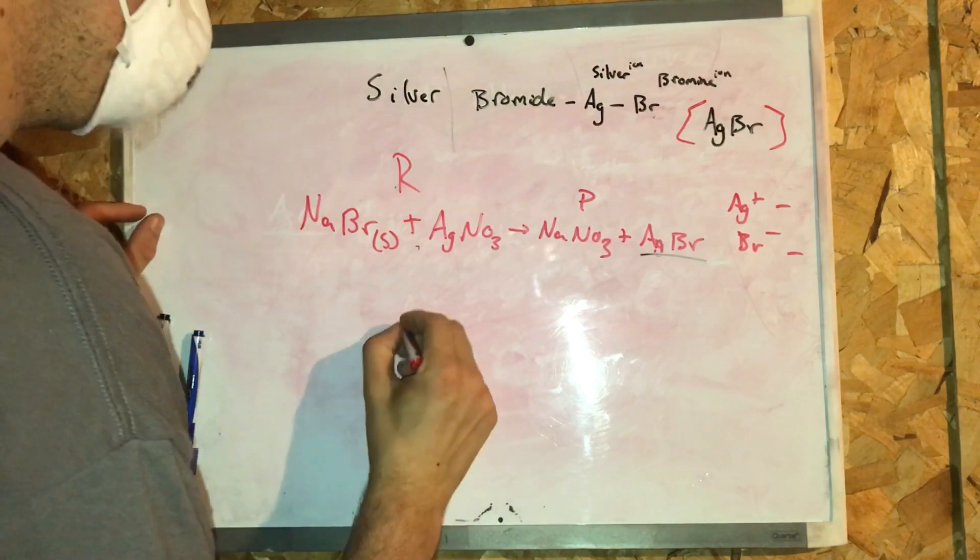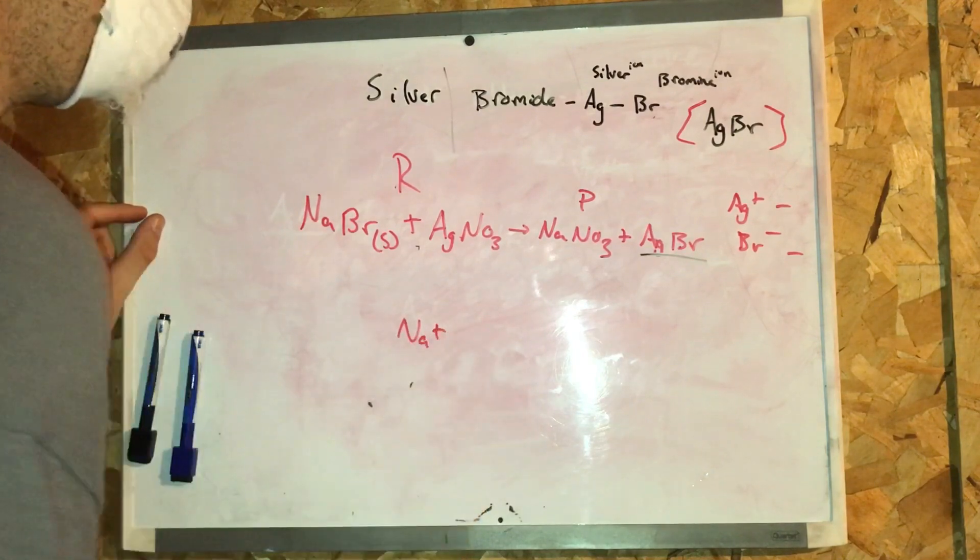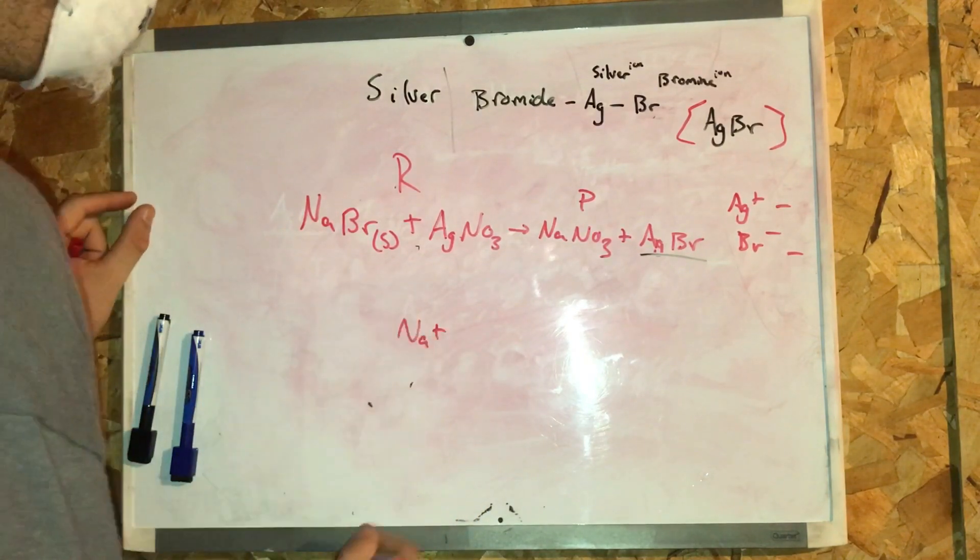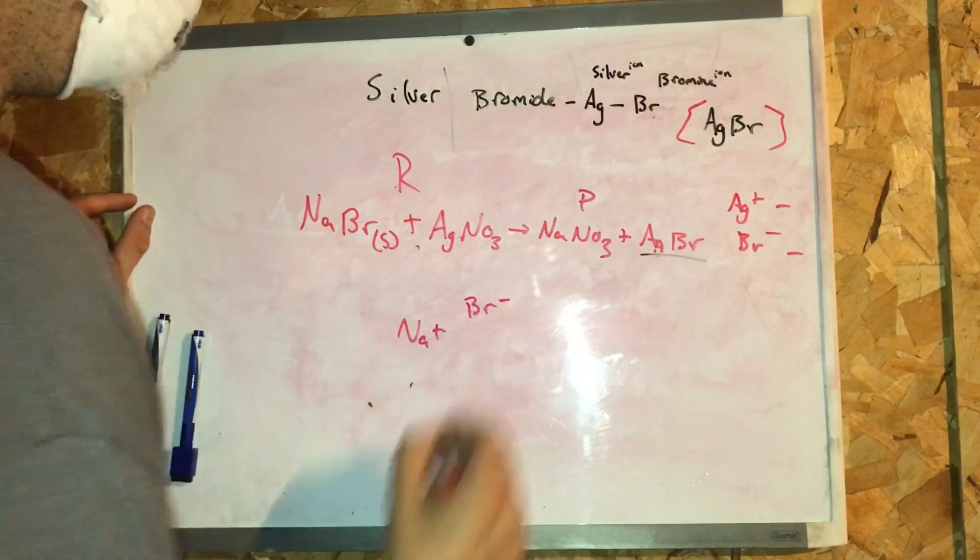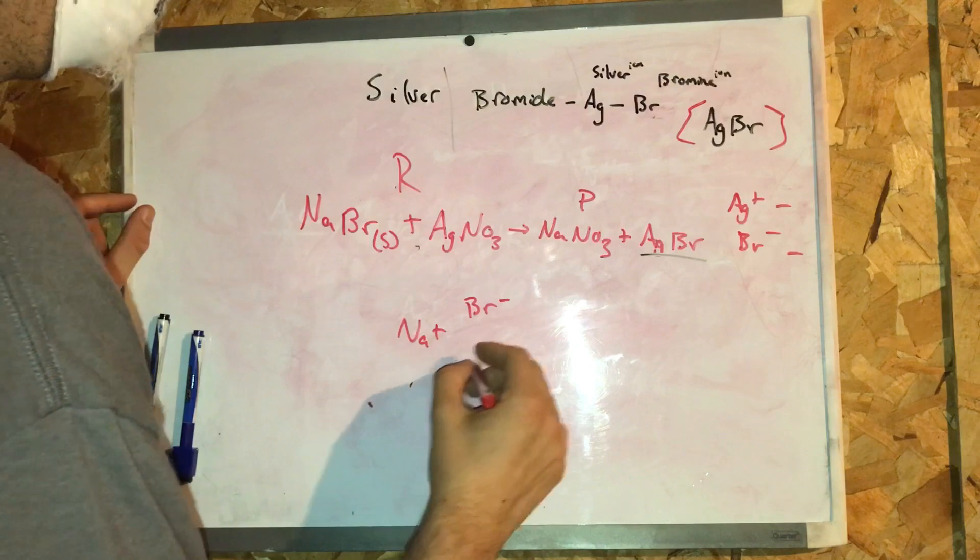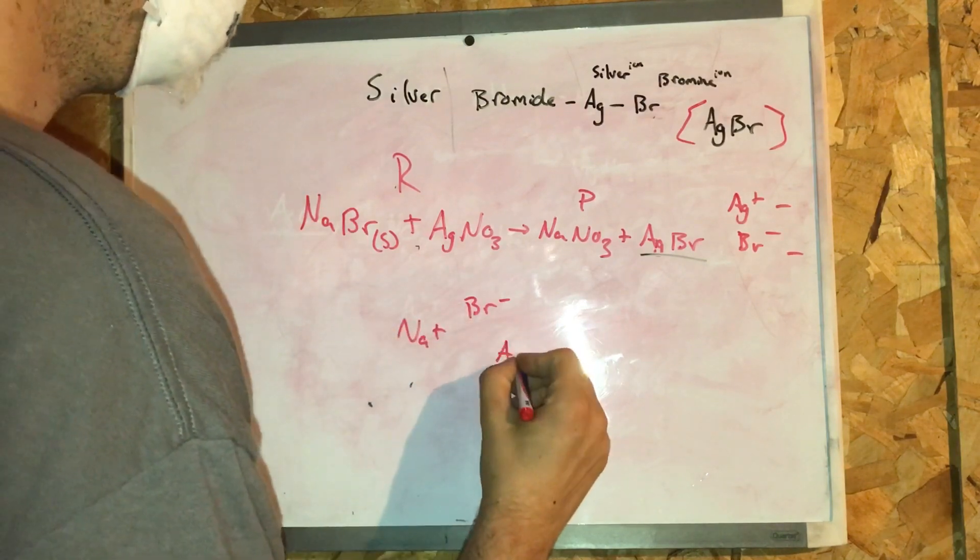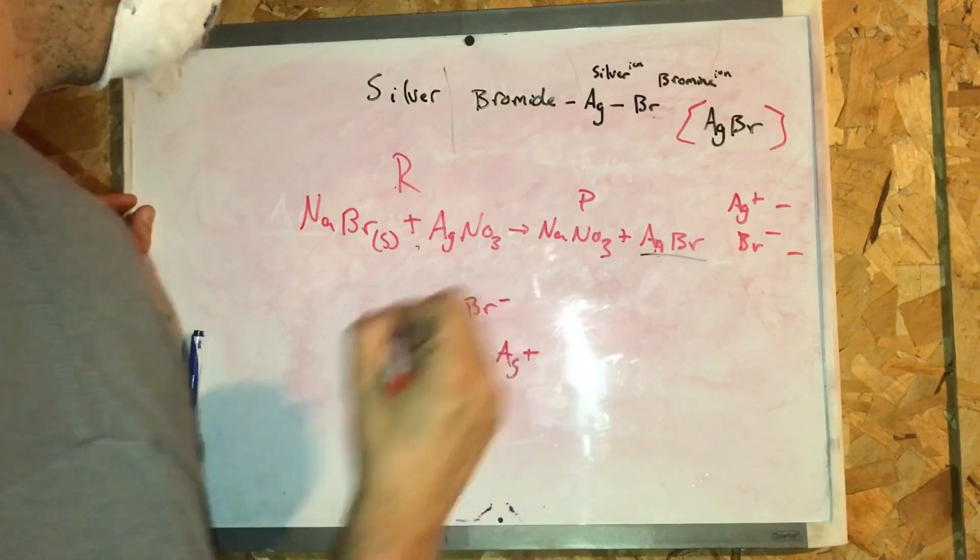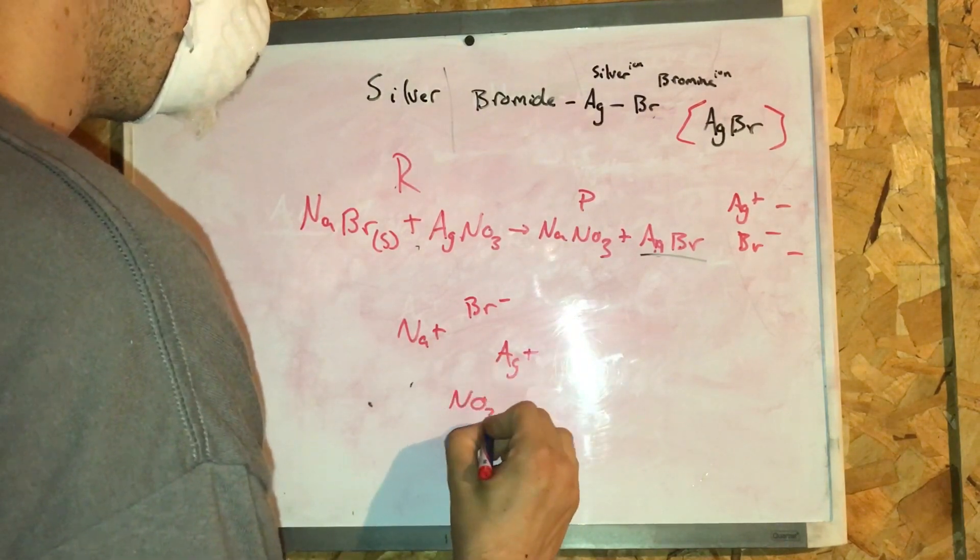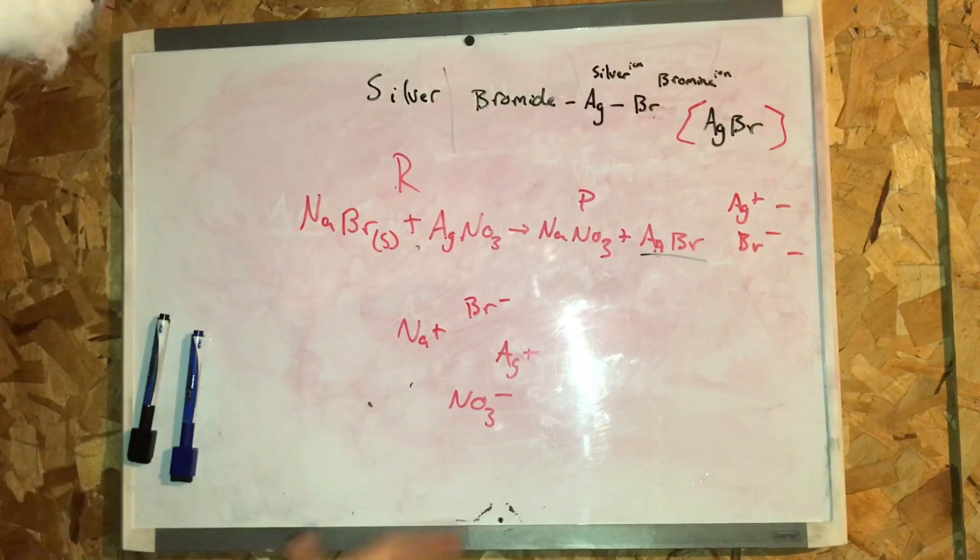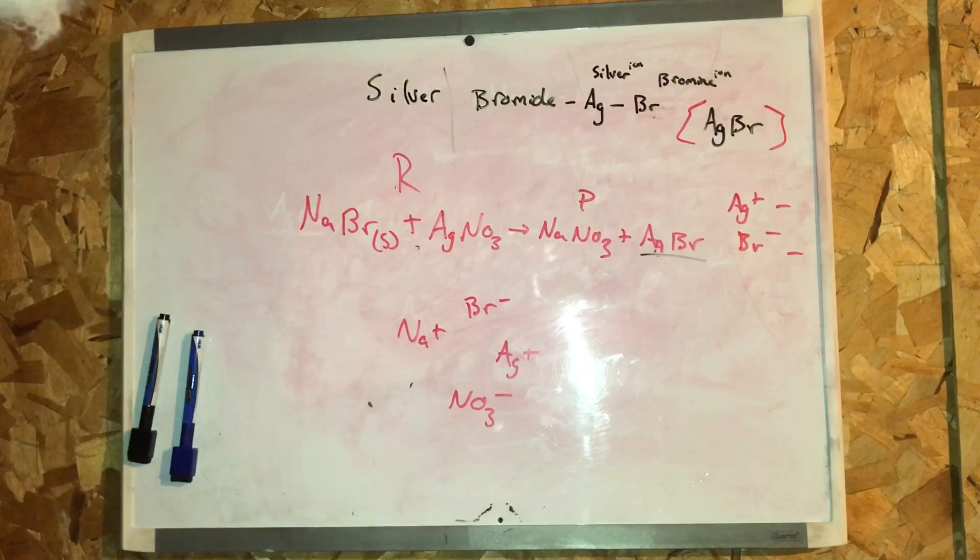As ions, we have sodium inside of a flask, bromide negatively charged, silver is present positively charged, and NO3, which is the nitrate ion, negatively charged.